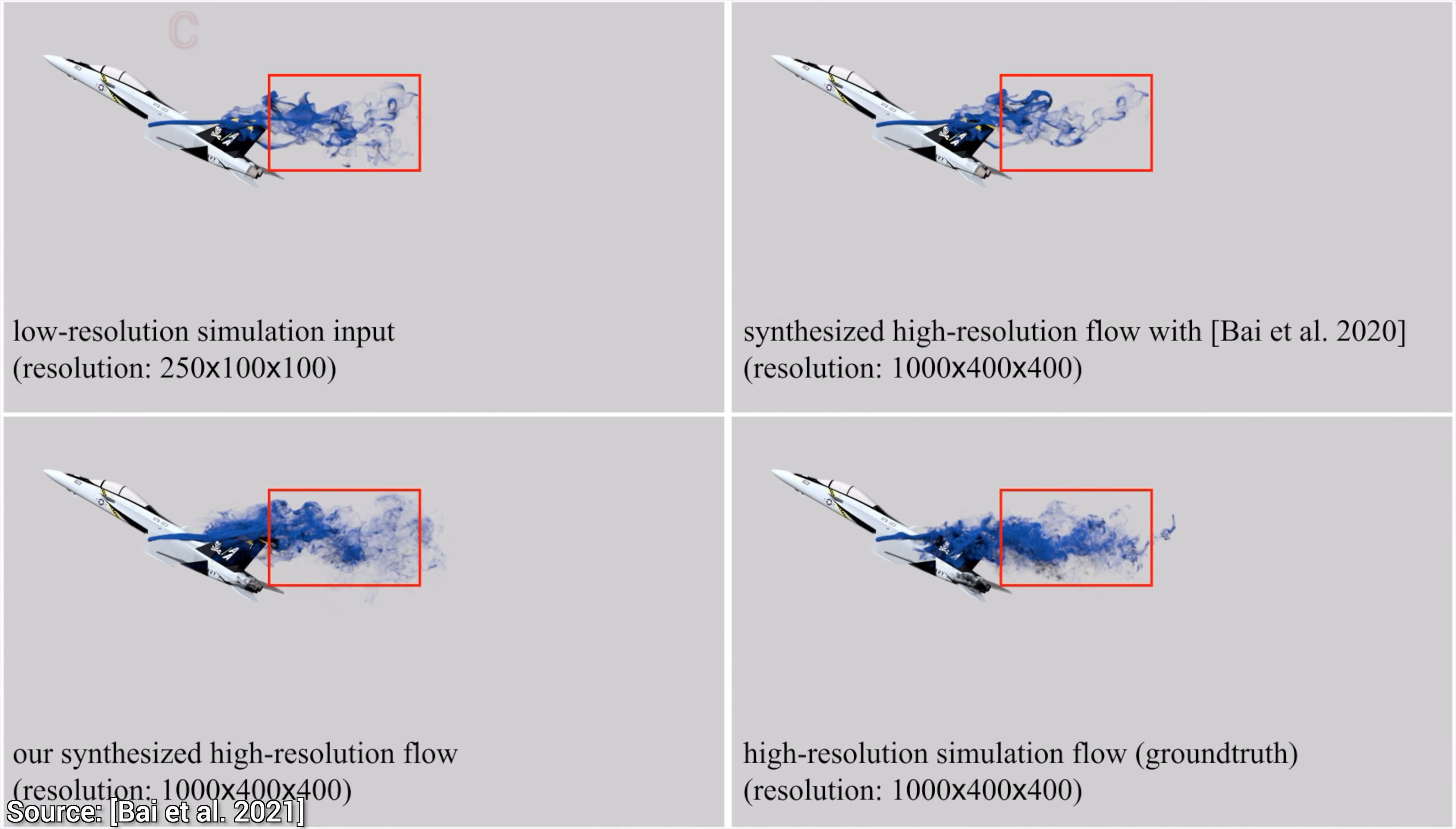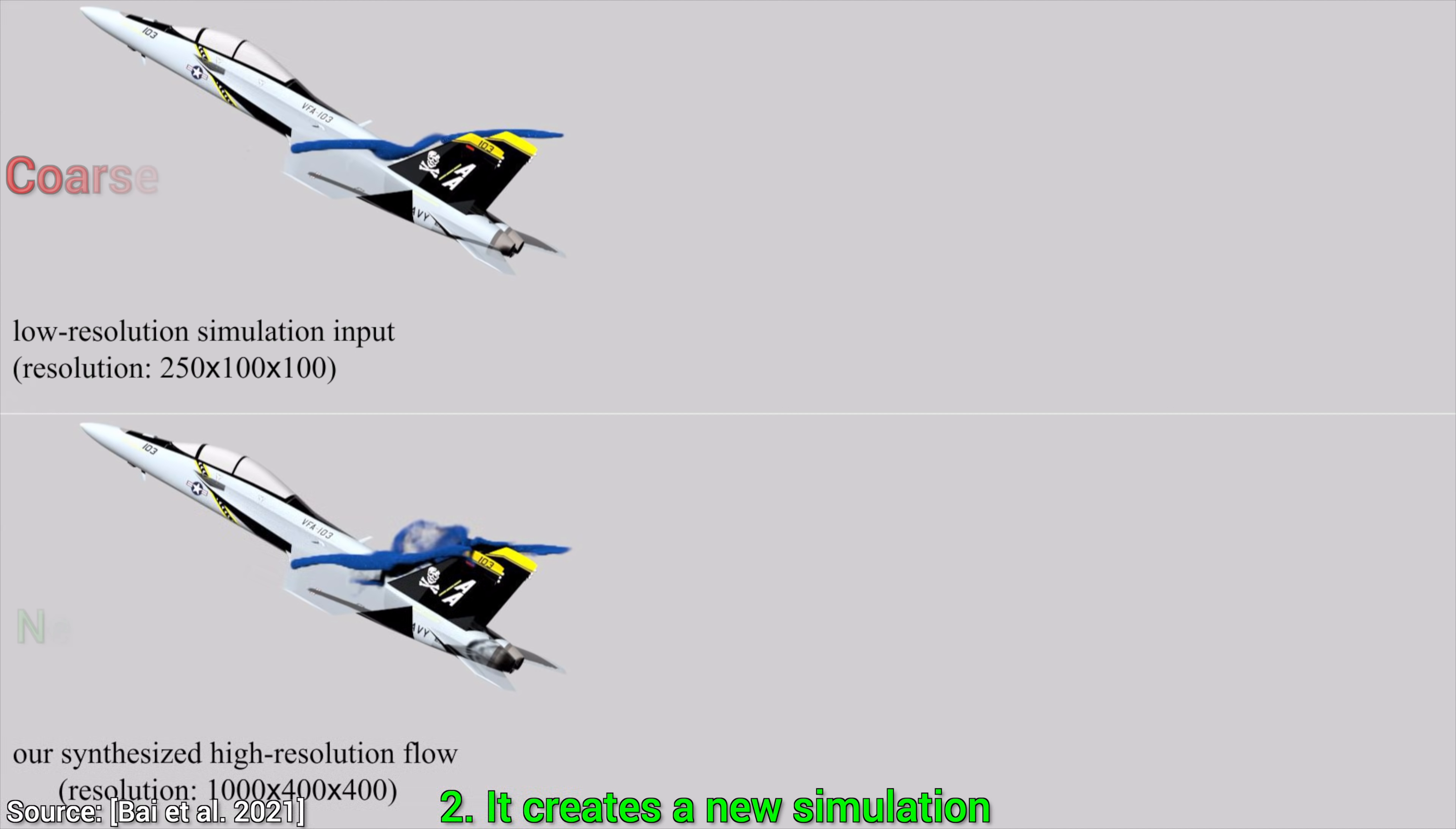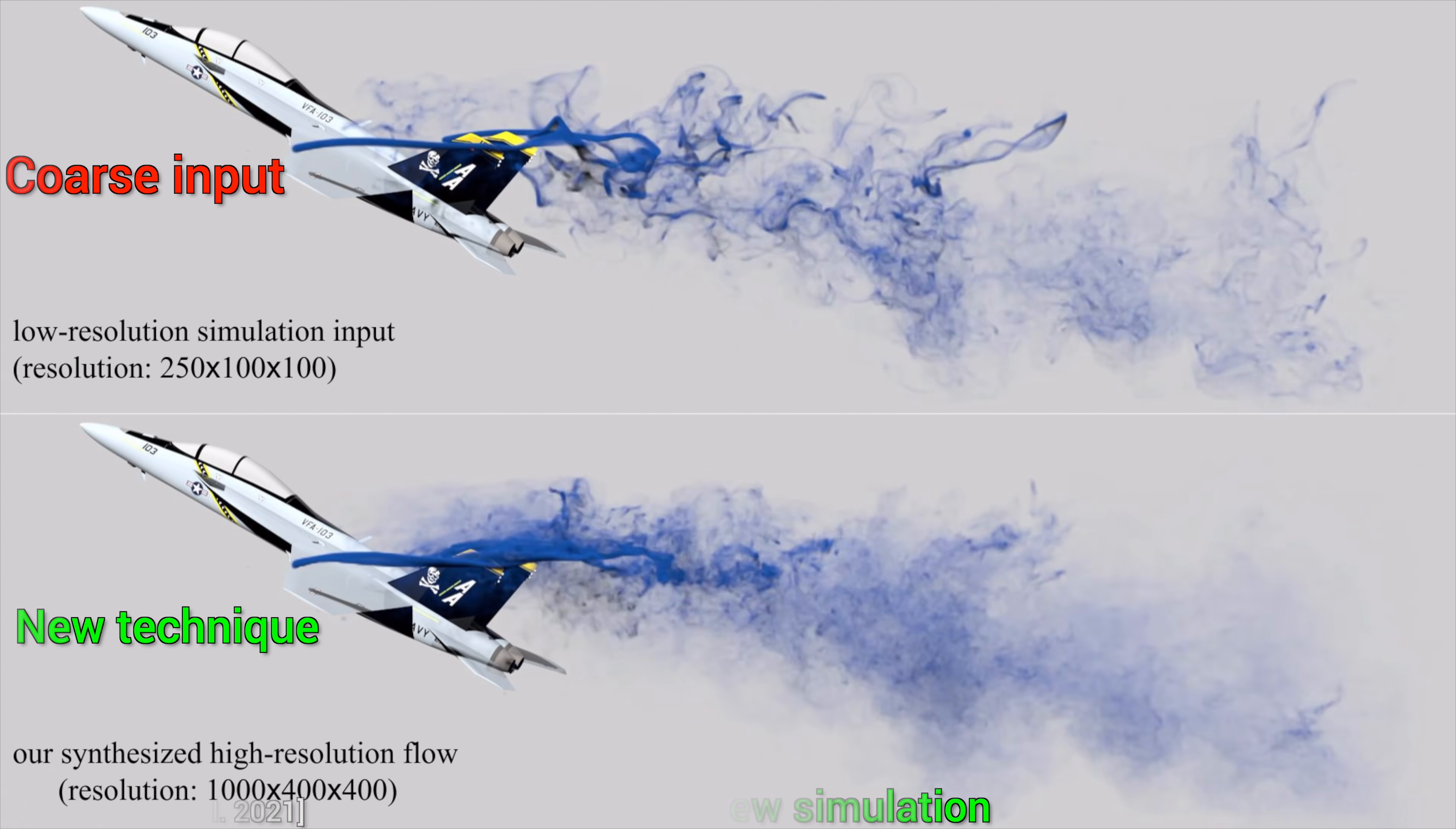Now, two previous methods typically try to take this coarse input simulation and add something to it. But not this new one. No, no, this new method creates a fundamentally new simulation from it. Just look here, it didn't just add a few more details to the input simulation, this is a completely new work. That is quite a difference.